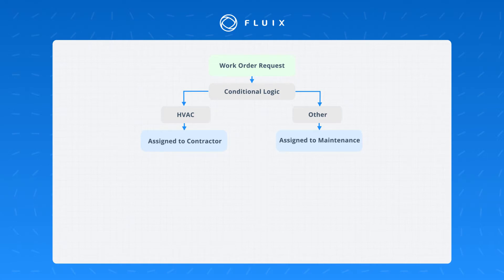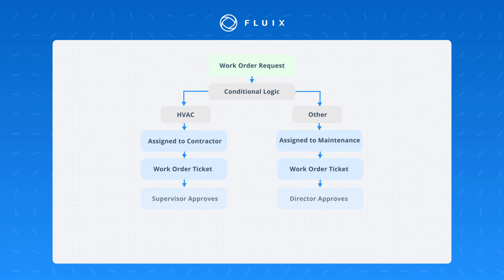In both those cases, we might want that contractor or internal maintenance team to fill out a work order ticket indicating the work they've done. When that work order ticket has been completed, with a contractor it goes to a supervisor, but with the maintenance team it goes to a director. And once the ticket is completed and reviewed, the ticket can be closed.